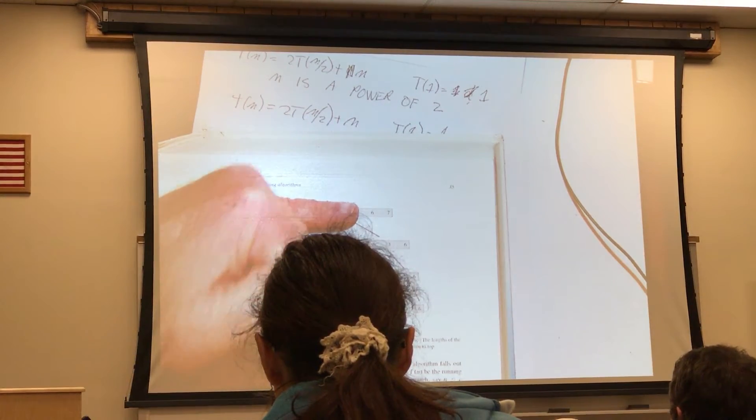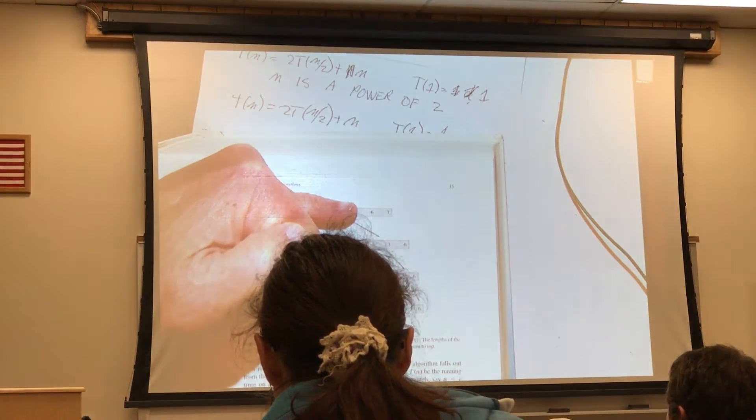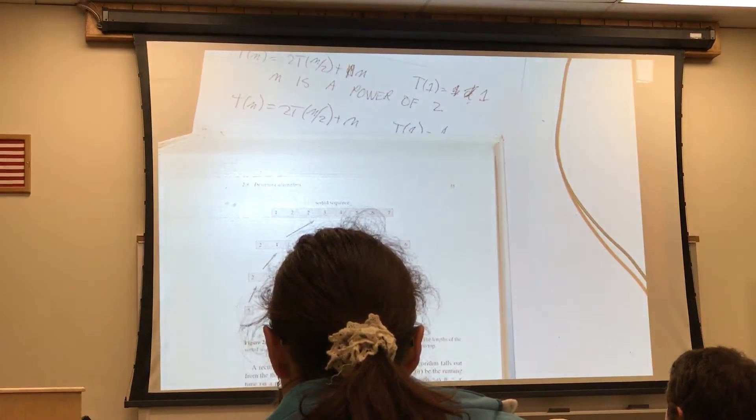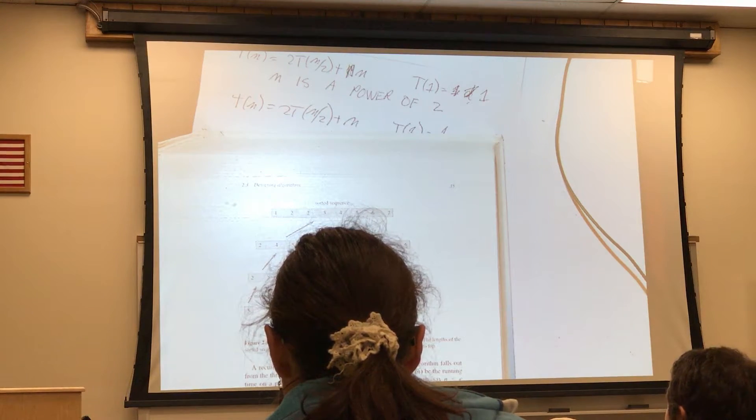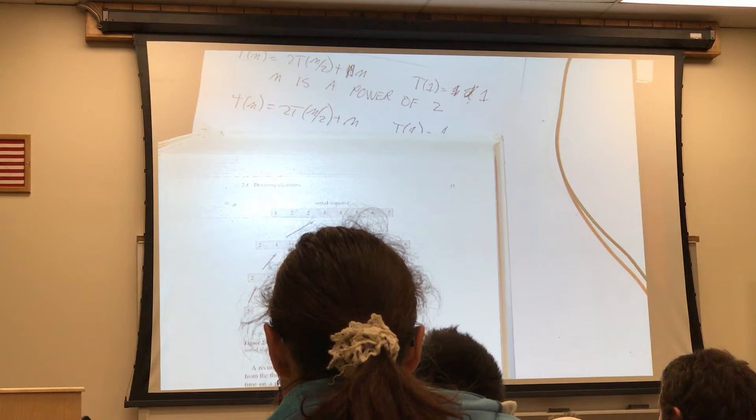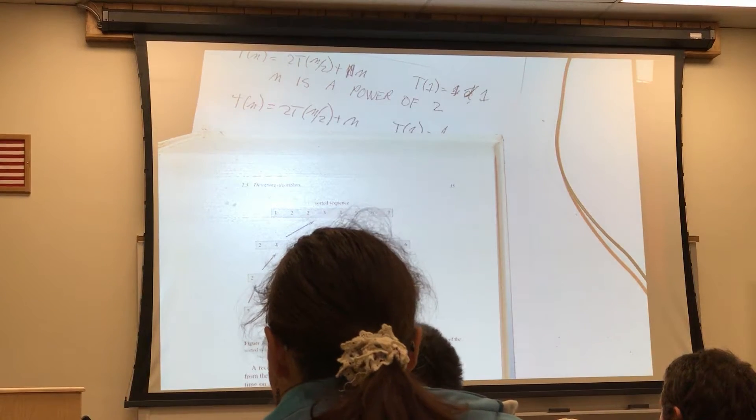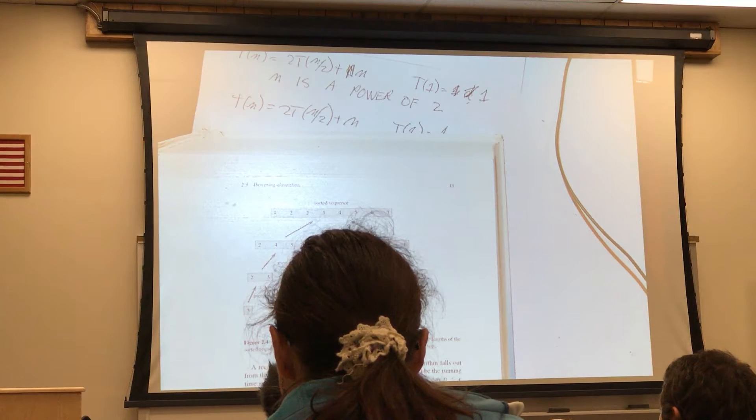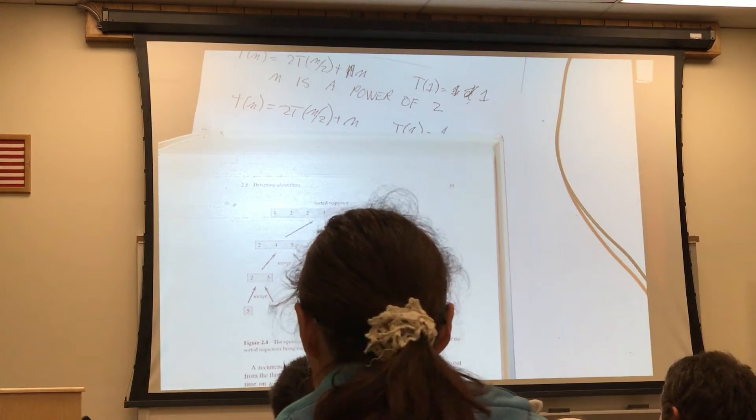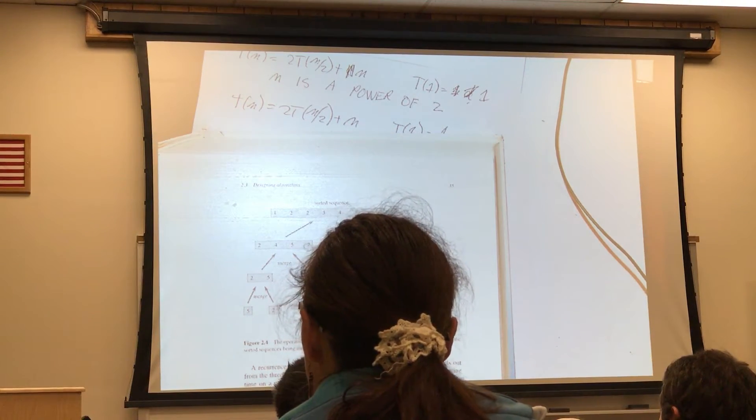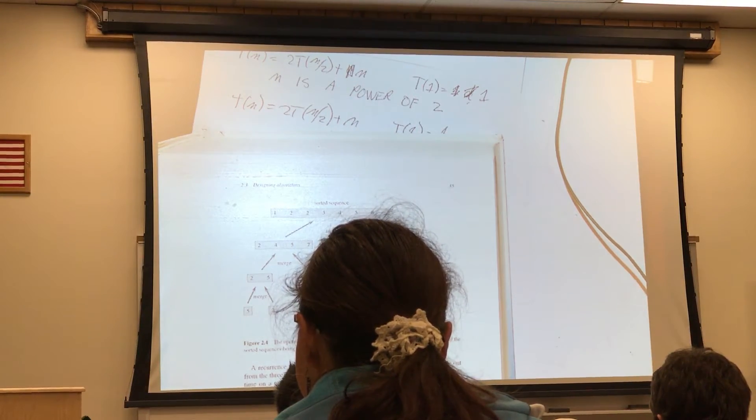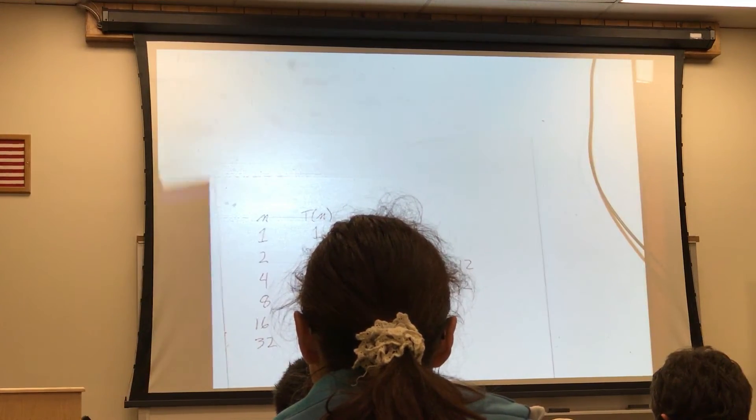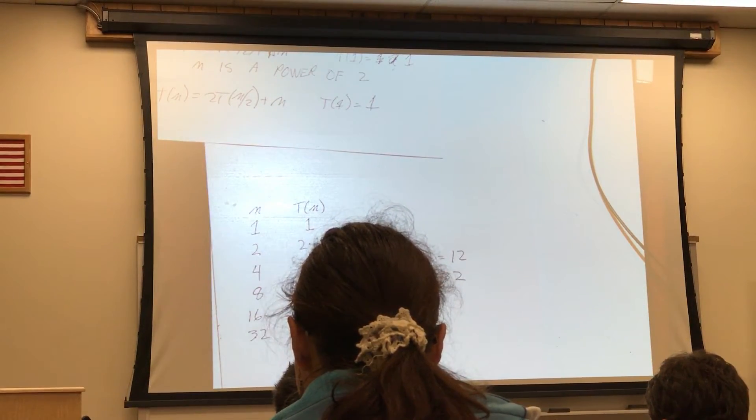In general, when this is n up here, n is a power of 2. What's the total cost of each level? n. How many levels are there? There's log base 2 of n levels because log base 2 of n is just the number of times that we can divide by 2 until we get down to 1. Each recursive call divides by 2. So it's n times log base 2 of n. This is our big theta bound for T(n).